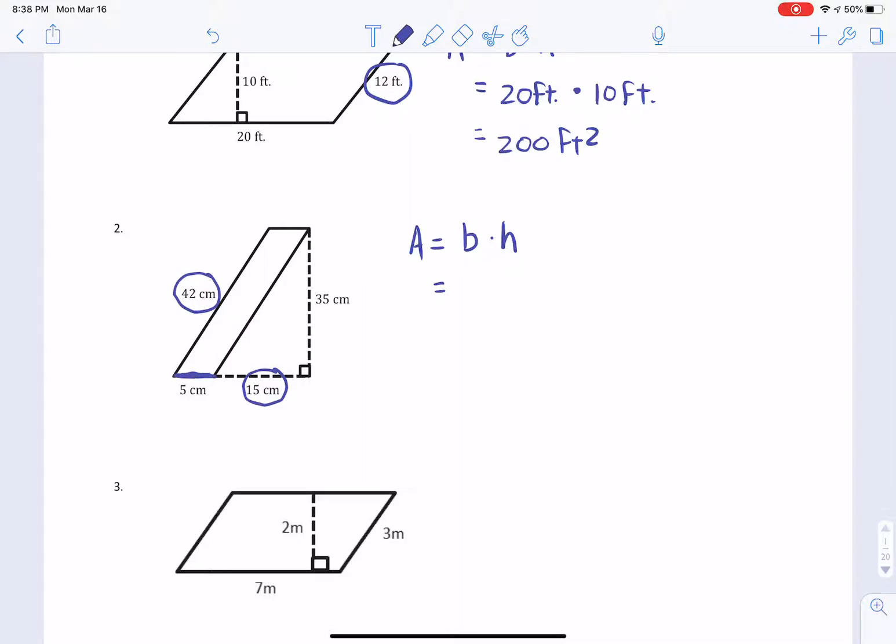The length of the base is 5 centimeters. The length of the height is 35 centimeters. Notice, it's that perfect perpendicular line. It's going straight up and down. It is the height, 35 centimeters. Now let's do some math. 5 times 35 is 175, I believe. 175 centimeters squared.